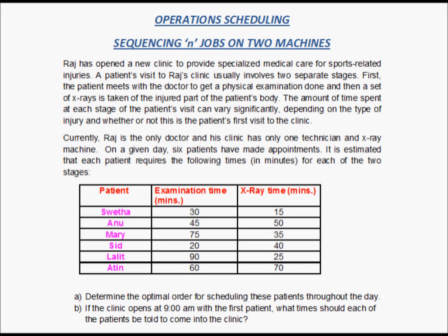Let us look at another example of sequencing jobs on two machines. Raj has opened a new clinic to provide specialized medical care for sports-related injuries. A patient's visit to Raj's clinic usually involves two separate stages. The first stage is where the patient meets with the doctor to get a physical examination done, and then a set of x-rays is taken of the injured part of the patient's body.